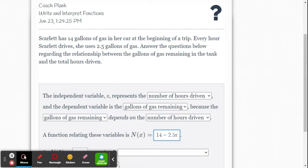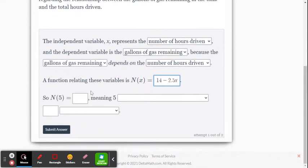So you just multiply the number of hours by the 2.5 and you subtract that from 14. That should give us how much gas we have left. So N of 5 equals, well, 5 times 2.5 is 12.5. So it's going to be 1.5, meaning 5 hours driven will result in 1.5 gallons left in the tank.